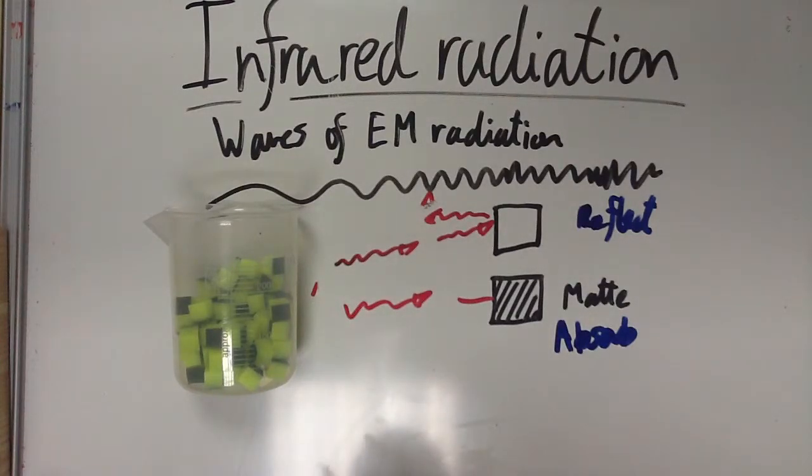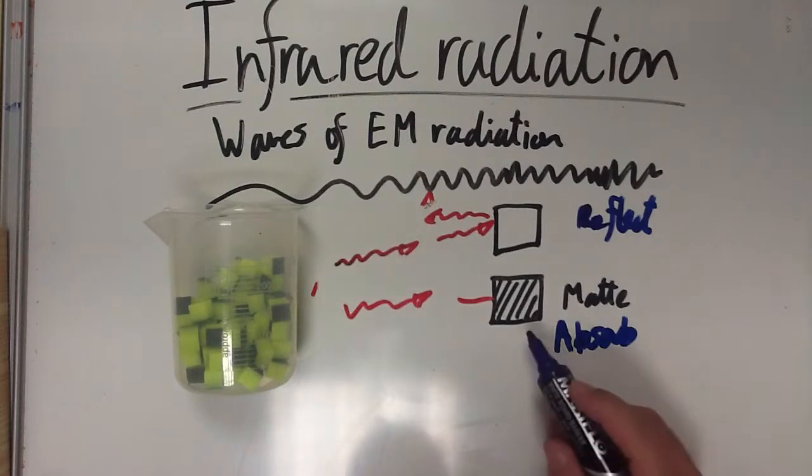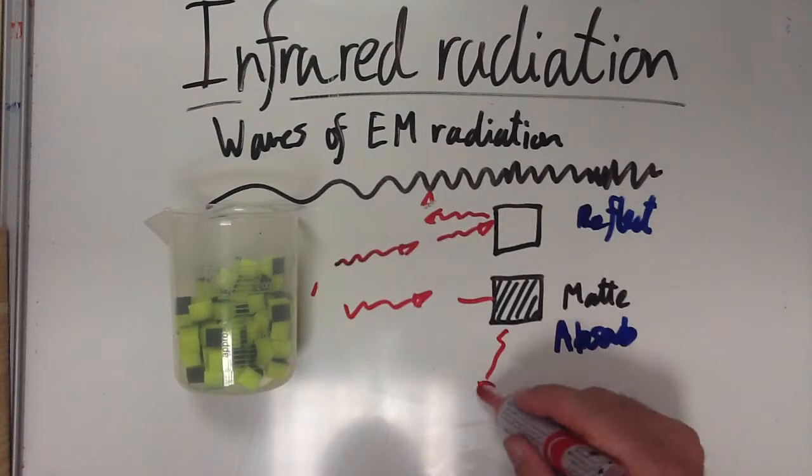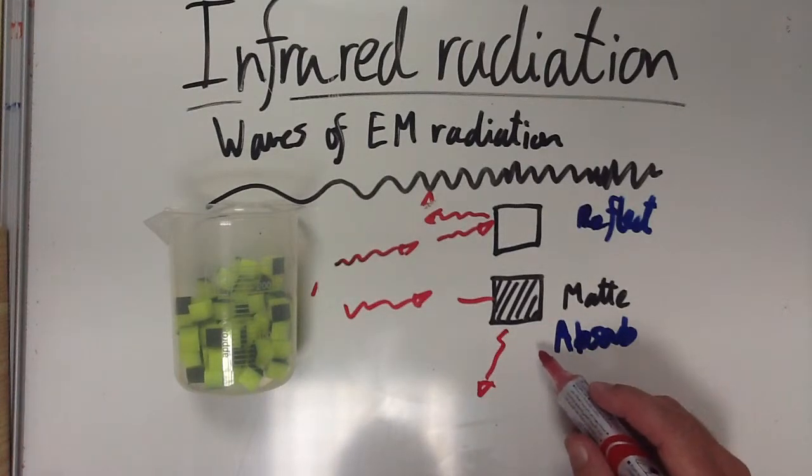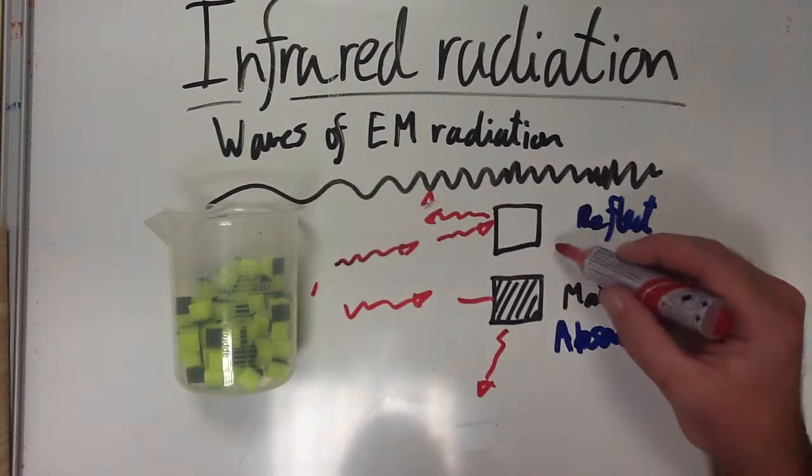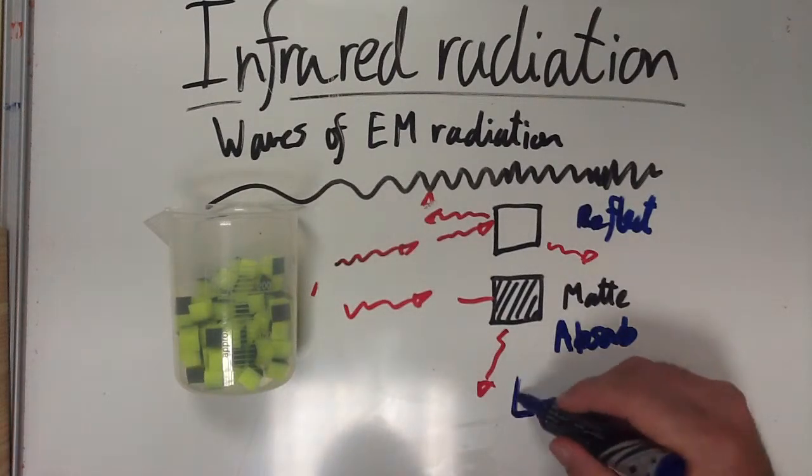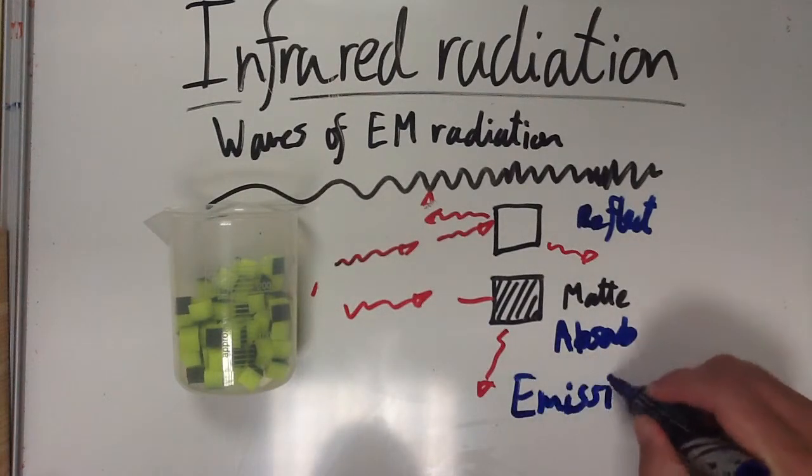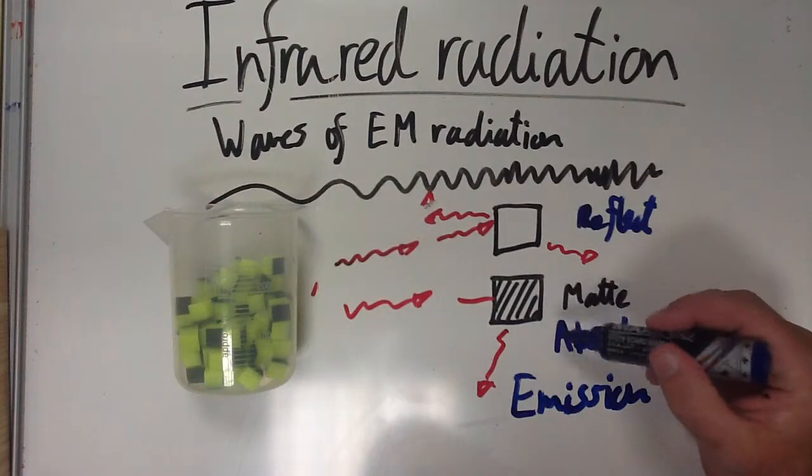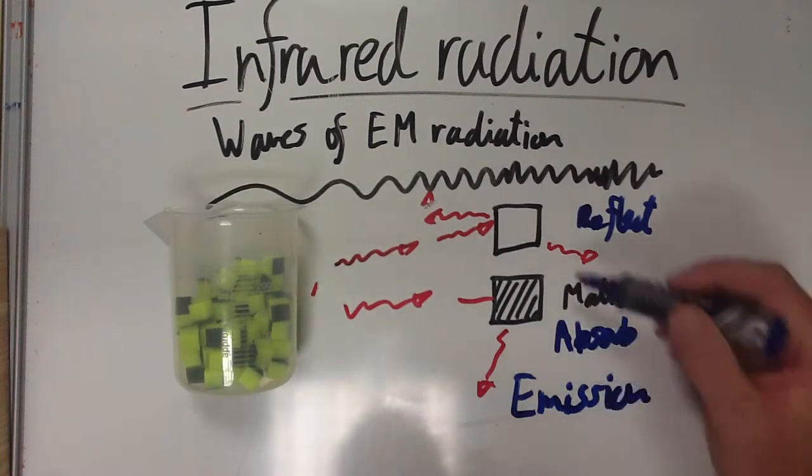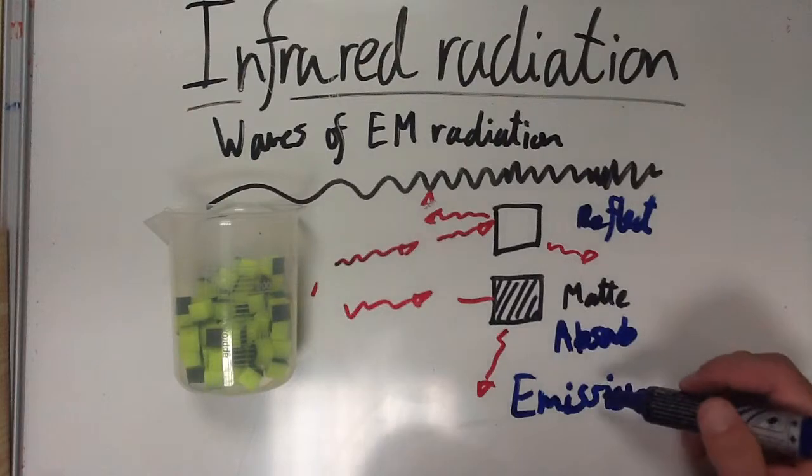Now, it's the opposite way when it comes to emission. Dark surfaces are very good at giving off infrared radiation. So a white surface here is very poor at emitting it. So in terms of emission, a dark matte surface is very good at emitting infrared radiation, whereas a white or shiny surface is very poor at emission.